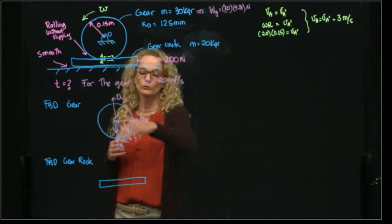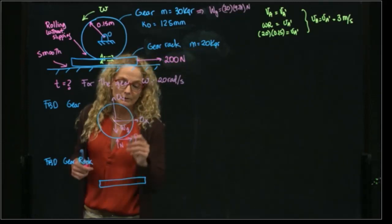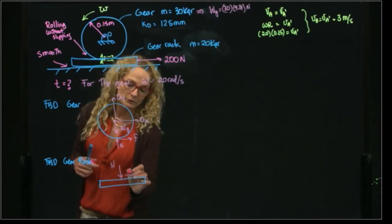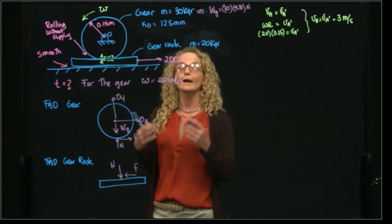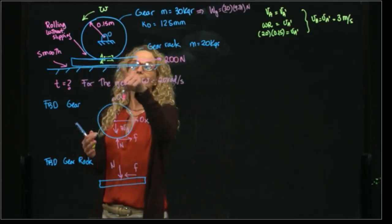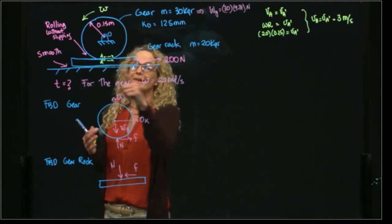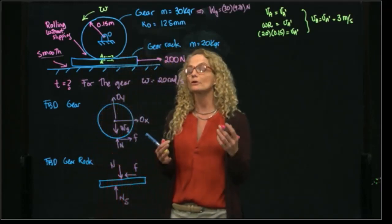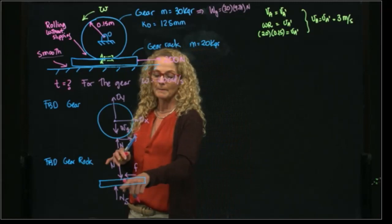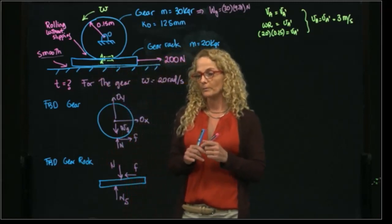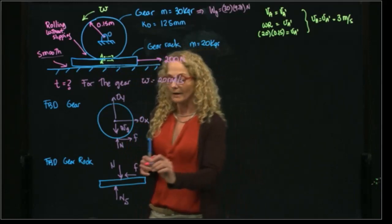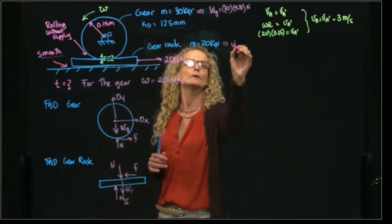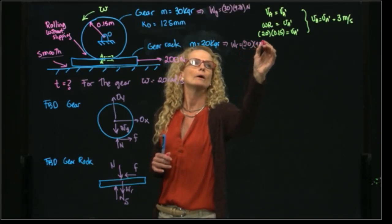For the free body diagram of the rack: by action and reaction, we have exactly the same normal force in the opposite direction, and also the friction force in the same magnitude but opposite direction. We have a normal force between the rack and the floor. It says the floor is smooth, so we only have a normal force from the surface and no friction force between the rack and the floor. The weight of the rack is 2 times 9.81 newtons.